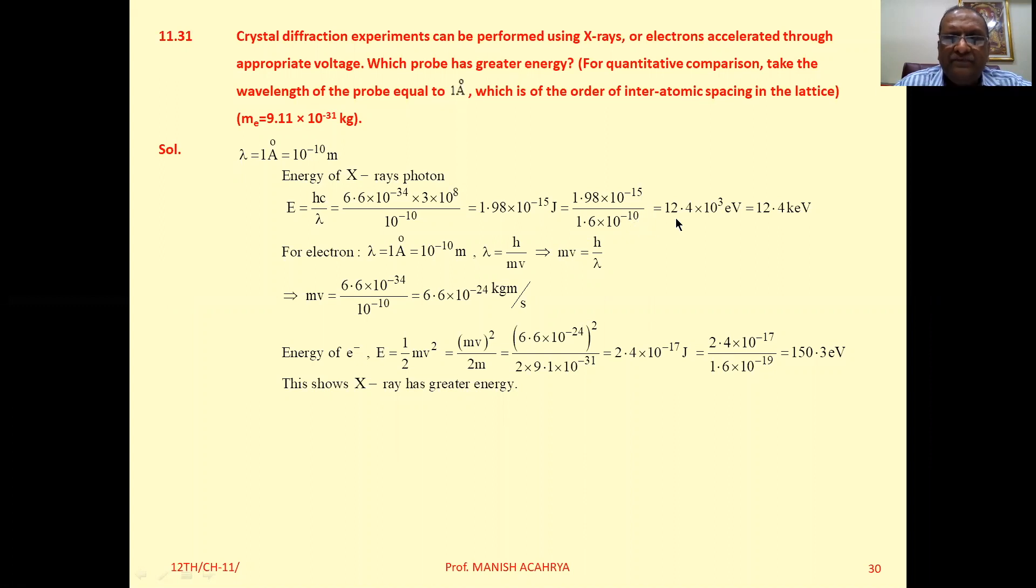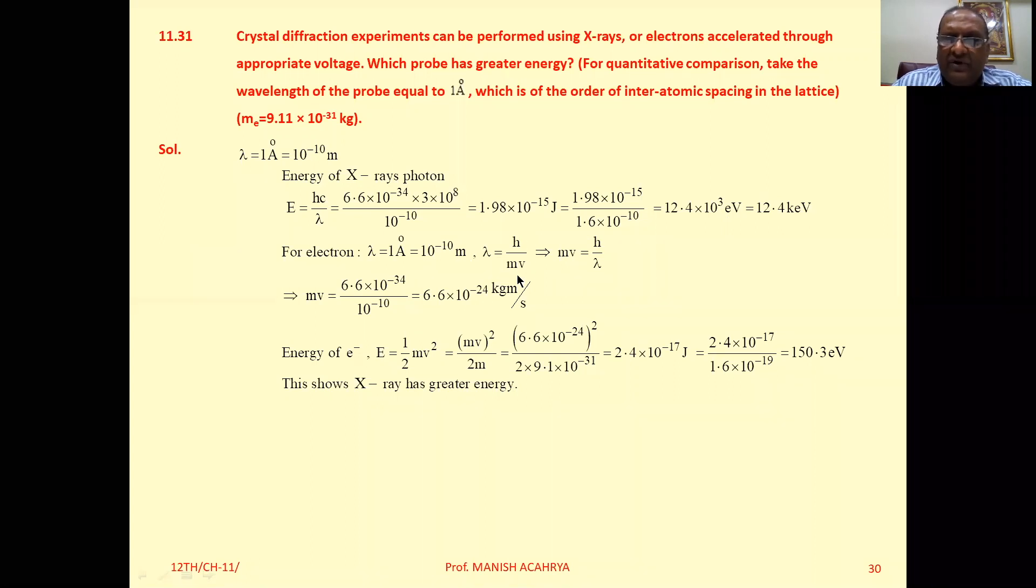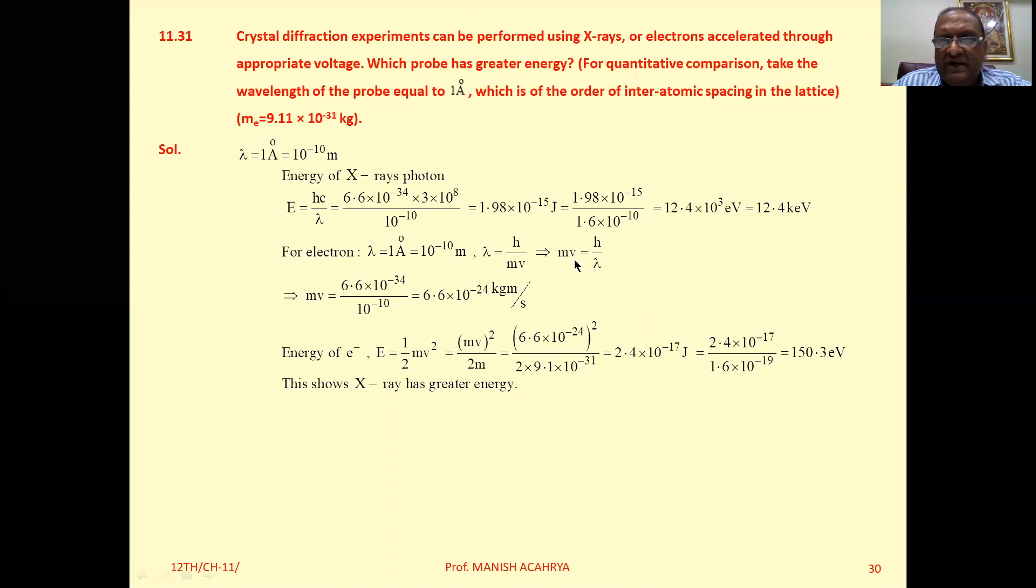So you will get energy in terms of electron volt. Then if for electron we take the lambda that is 10 raised to minus 10 meter, then lambda that is h upon mv, so we can write mv that is h upon lambda.